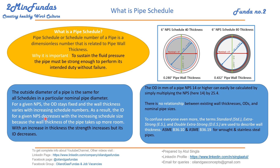As a result, the ID of a given pipe decreases with the increase in schedule number. As the wall thickness increases, the ID will keep on decreasing. With the increase in thickness, the strength will keep on increasing — lesser diameter, more thickness, more strength.